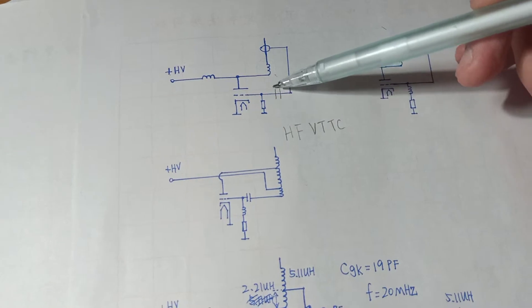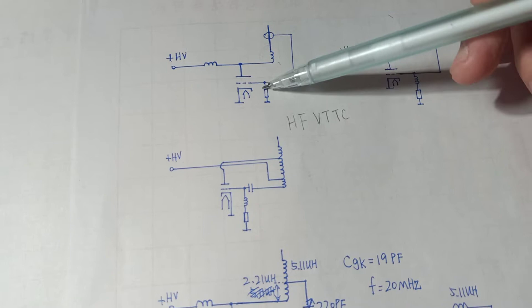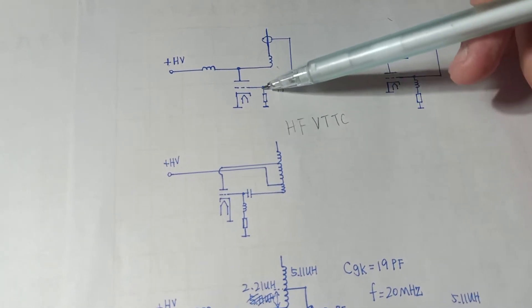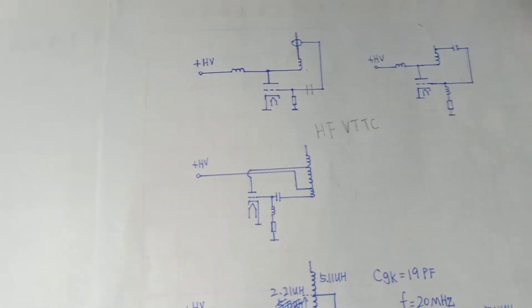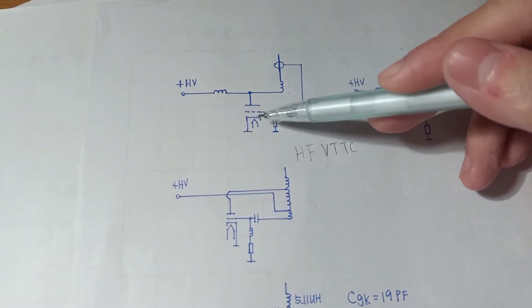If you don't have this blocking capacitor, the arc will destroy your grid. This one here is a grid leak resistor to obtain a certain negative voltage on the tube's grid.